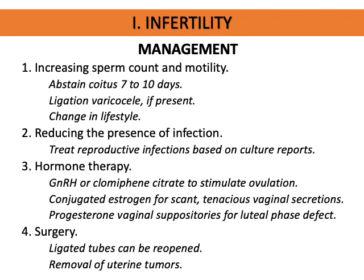Second is reducing the presence of infection by treating reproductive infections in either partner, based on culture reports, to effectively destroy causative agents. Third is hormone therapy, which includes taking GnRH or clomiphene citrate (Clomid) among females to stimulate ovulation. Conjugated estrogen may be used if the condition is due to scant tenacious vaginal secretion impeding fertilization, and progesterone vaginal suppository for luteal phase problems.